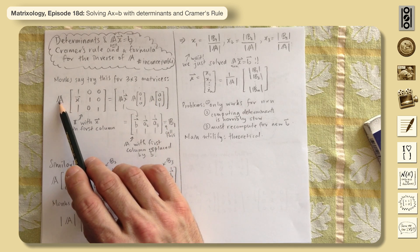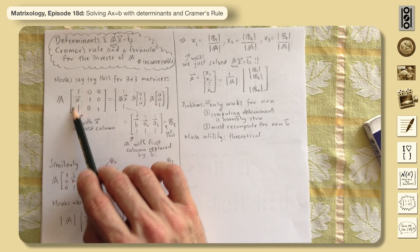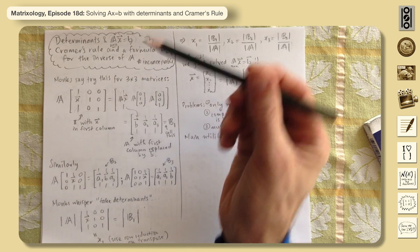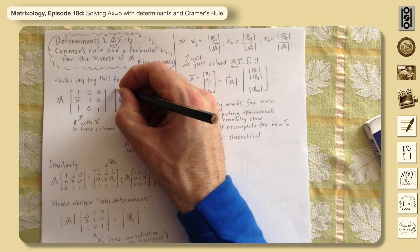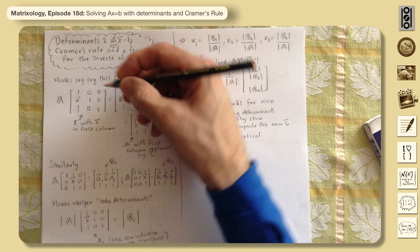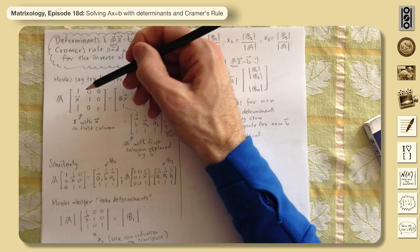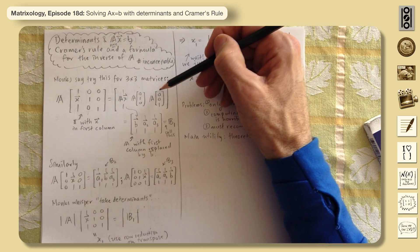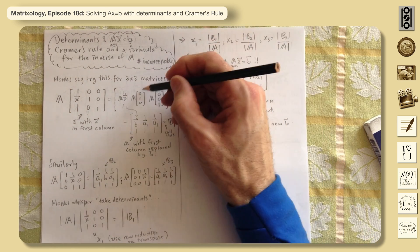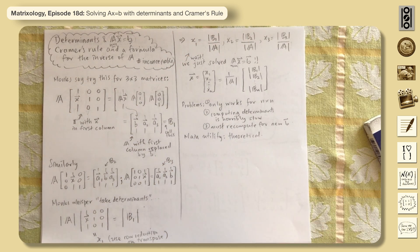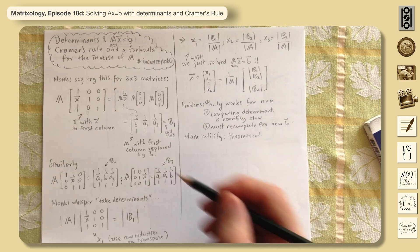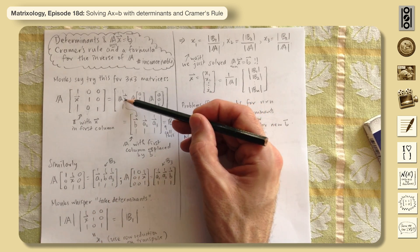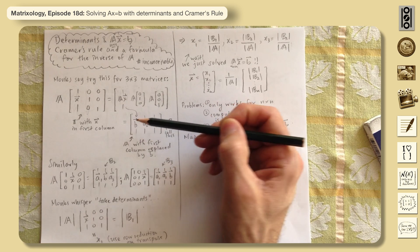The way this works is: A times the first column gives you the first column of the result. A times the second column gives the new second column, and A times the last column gives the last column. Since x is a solution to Ax = b, A times x equals b, so we replace that first column result with b.